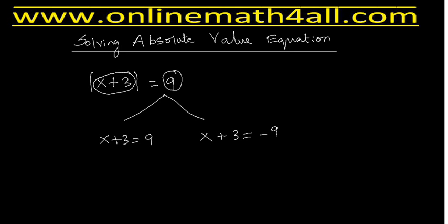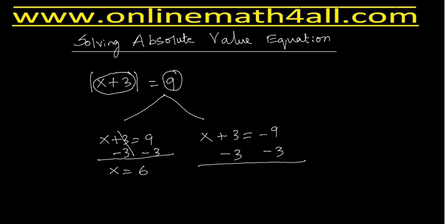In the first branch, we have x plus 3 is equal to 9. To solve for x, we take negative 3 on both sides, so we get x is equal to 6. In the second branch, we also take negative 3 on both sides, so we get x is equal to negative 12.